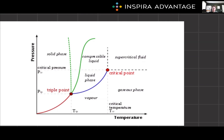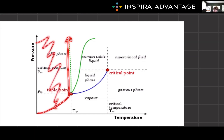We can think this through: at a high pressure and a low temperature, we would have a solid. If we increase the temperature a little bit, we move to the right and reach our liquid. So what happens when we go from a solid to a liquid? We melt — or freeze. So this would be our fusion curve, because fusion is just melting slash freezing.